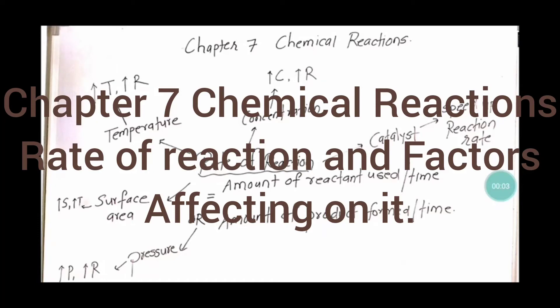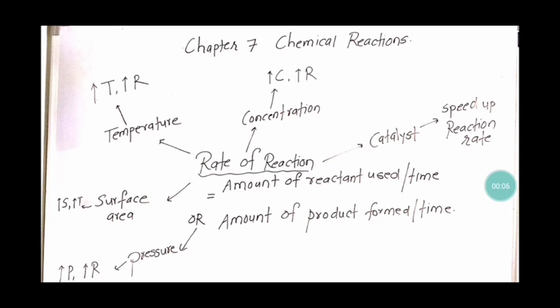Welcome to this YouTube channel. Today my topic is chemical reactions, and we are going to talk about rate of reaction. The rate of reaction can be defined as the amount of reactant used with respect to time, or the amount of product formed with respect to time. As the reaction proceeds, the amount of reactant decreases and the amount of product increases.